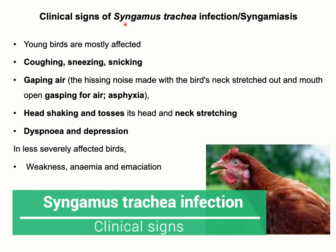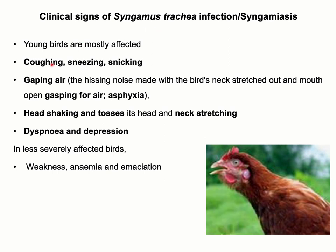Clinical signs of Syngamus trachea infection or Syngamiasis: the infection is characterized by coughing, sneezing, and a clicking sound from the affected birds. The most characteristic sign is gaping for air — due to airway obstruction, birds cannot breathe normally and will open their mouths while stretching out the neck to ease difficult breathing, hence the name gapeworm. Other clinical signs include head shaking and tossing of the head to dislodge the airway obstruction. In less severely affected birds, weakness, anemia, and emaciation can also be seen.